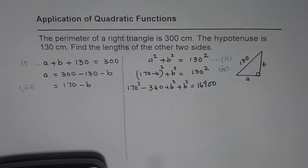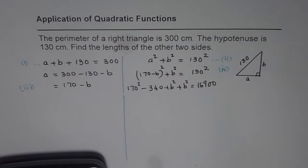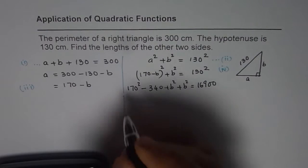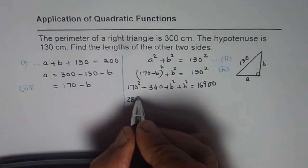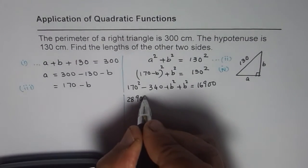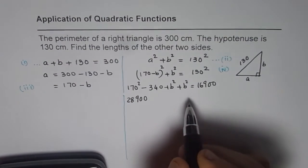Now, 170 squared is equal to 28,900. We are also bringing 130 squared, which is 16,900, over to this side.